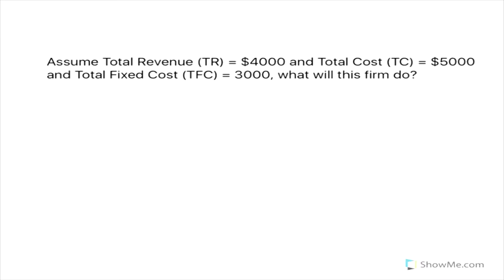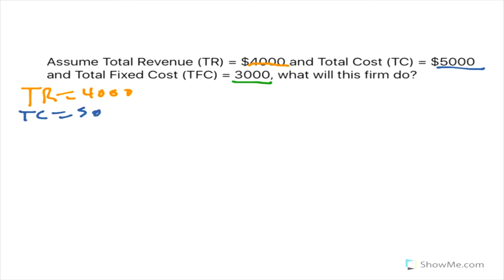Another business has approached us and asked if they should shut down or continue to operate. They've given us their total revenue, their total cost, and their total fixed cost. TR equals $4,000, total cost equals $5,000, and total fixed cost equals $3,000.